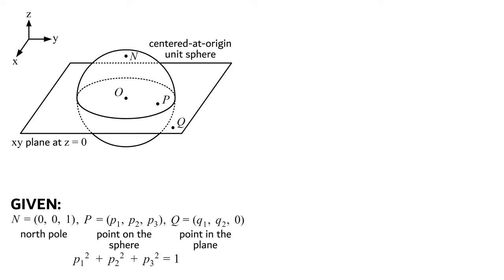Our last given is that we're going to let the point q equal the point in the plane defined by Cartesian coordinates q1, q2, and 0. Point q is where the line that runs through n and p intersects the plane. Going backwards, you could also say that point p is where the line that runs through n and q intersects the sphere. Notice how point q has a z coordinate of 0, because the point will always live in the xy plane whose z coordinate is locked at that fixed value.